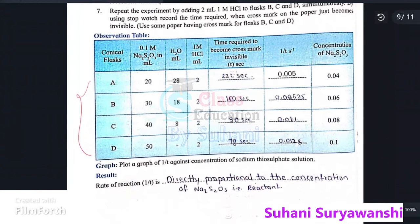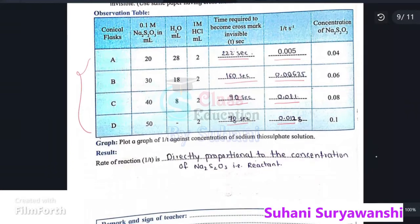First of all, the value is 222 seconds and 1 by t value is 0.005. Next value is 162 and the 1 by t value is 0.00625. 90 seconds, 0.011; 78 seconds, 0.0128.